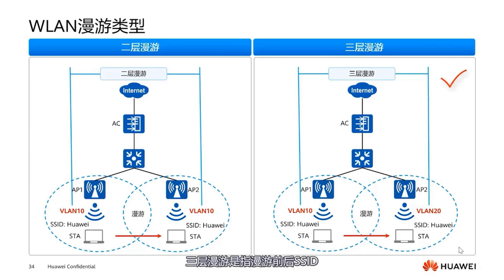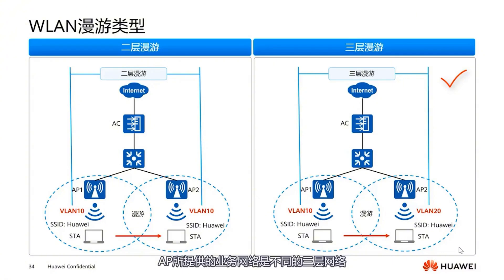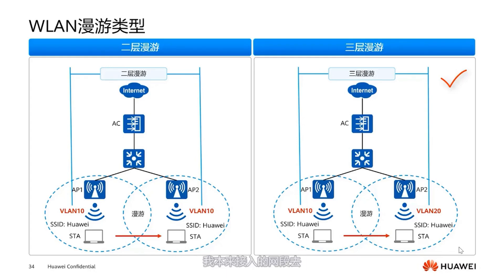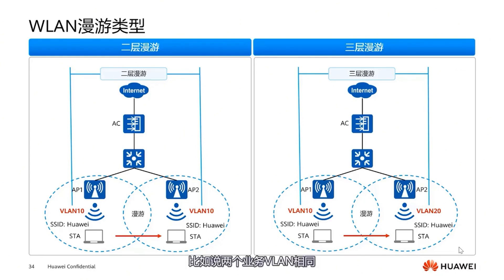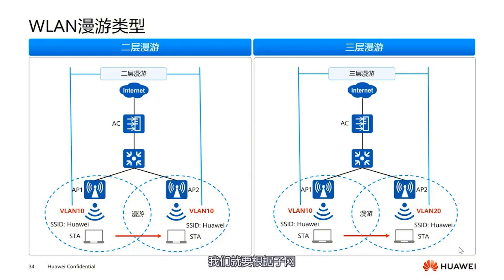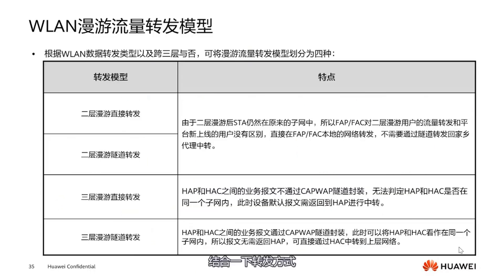For Layer 3 roaming, it refers to before and after roaming where the SSID, provided service, and VLANs are different. The network service provided by the AP is in different Layer 3 networks, corresponding to different gateways. To maintain the user IP unchanged, we need to redirect the traffic back to the original network segment of access, which can be achieved by roaming across VLANs. There is also a special scenario where two service VLANs are the same, but if the IP addresses are different, we must judge based on the subnet whether they are in the same subnet.